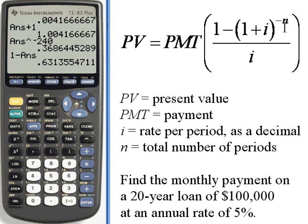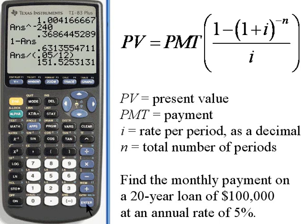Now I've got the entire numerator for this fraction. I want to divide that by i. So I want that answer, that numerator, divided by... We need parentheses here. i is the rate per year, that was 0.05, divided by the number of periods per year, and that was 12. So what we've got now is 151.52.